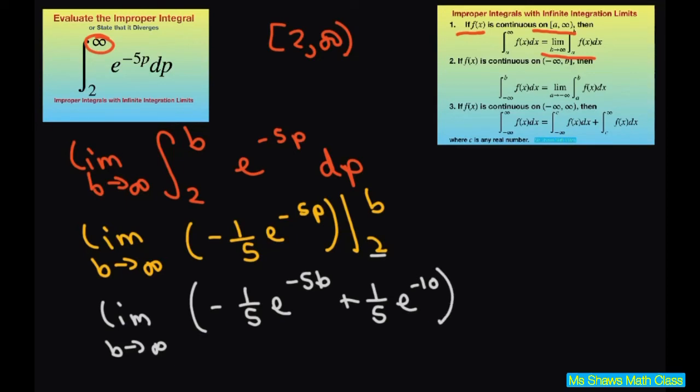Now looking at this when you substitute in a very large number here, this can be written as negative 1 divided by 5 e to the 5b. So what's going to happen is as you put in a larger and larger number here your denominator is going to get very large compared to your numerator.